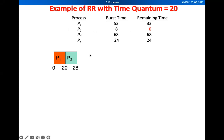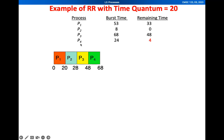Now we move to P3. P3 is also given 20 milliseconds, so we have a remaining time of 68 minus 20, which is 48. After P3, P4 will be executed. P4 is also given 20 milliseconds, so 24 minus 20 gives us a remaining time of 4 for P4. Since it is circular, we will go back to P1.